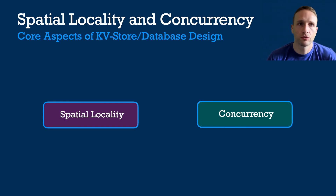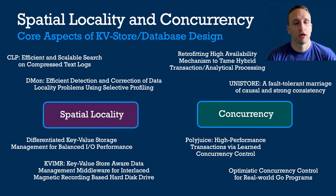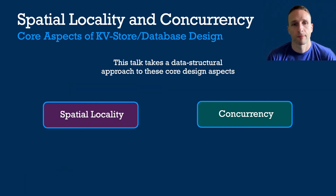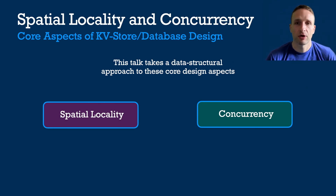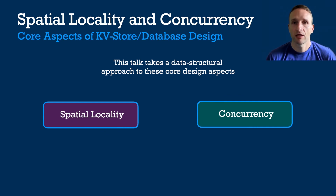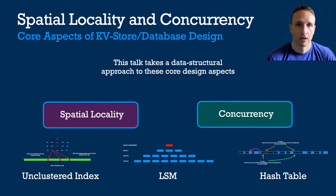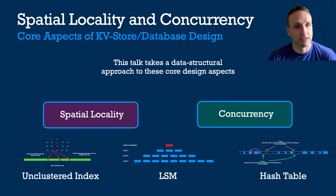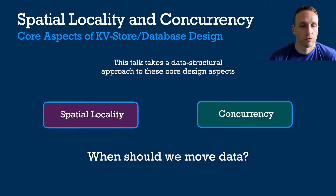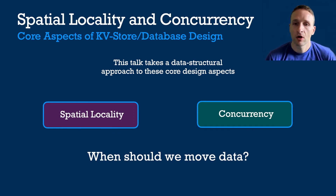This talk is going to focus on two core aspects of key value store and database design: spatial locality and concurrency. All the key value store and database papers at OSDI and ATC touch on one of these two topics. I'm going to take a data structural approach to these core design aspects. I'll introduce three data structures commonly used to implement key value stores and databases, and the key question I'll be asking is: when should we move data?